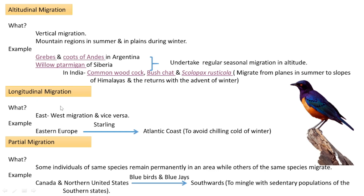Next is longitudinal migration — migration from east to west and vice versa. An example is the starling, which migrates from eastern Europe to the Atlantic coast to avoid the chilling cold of winter.